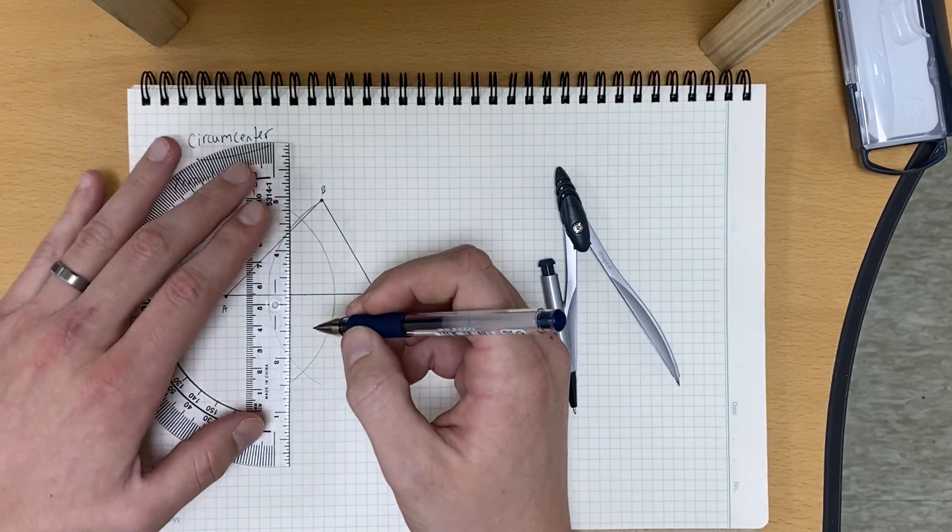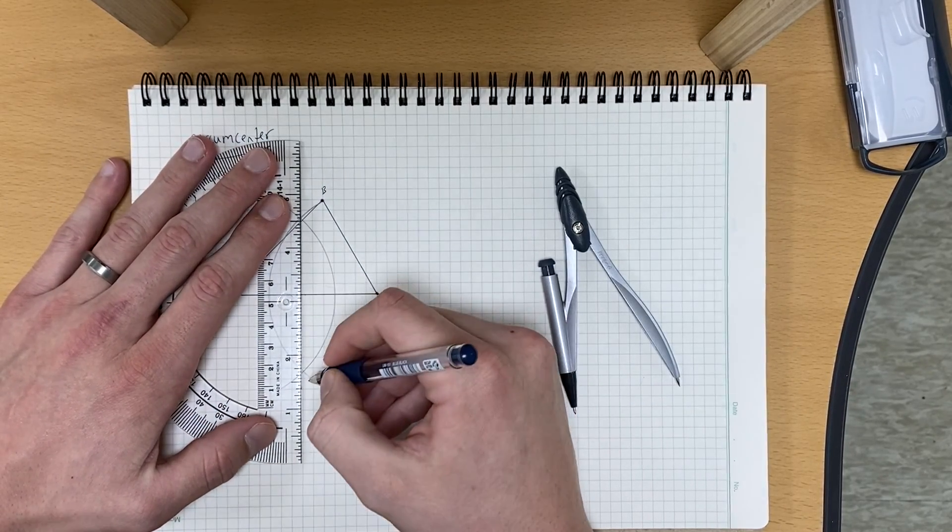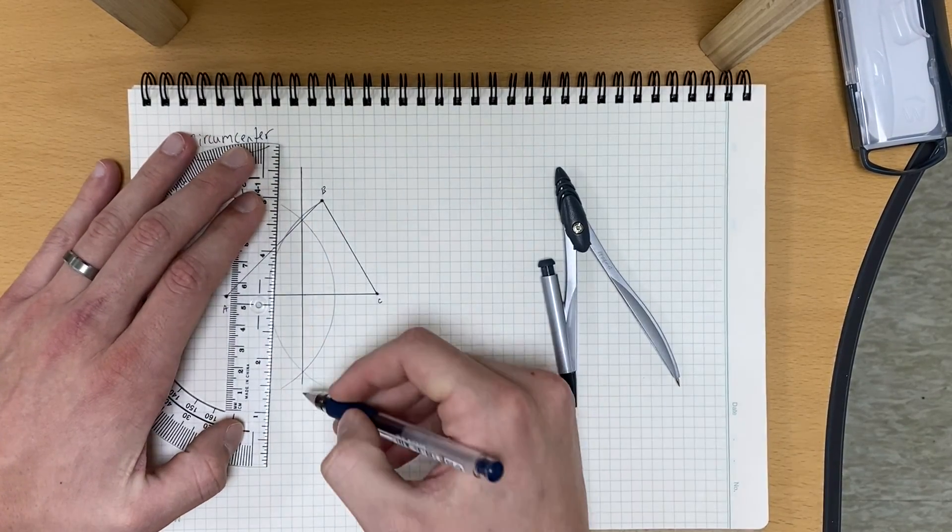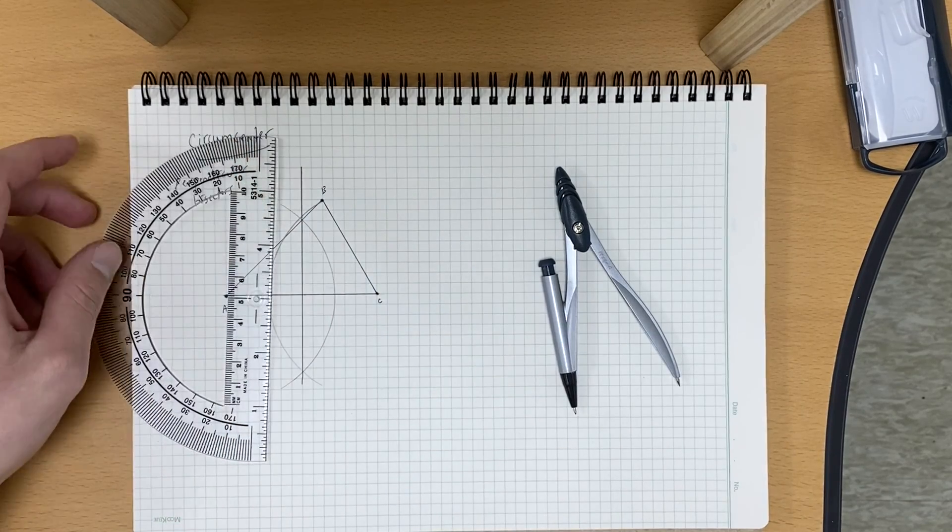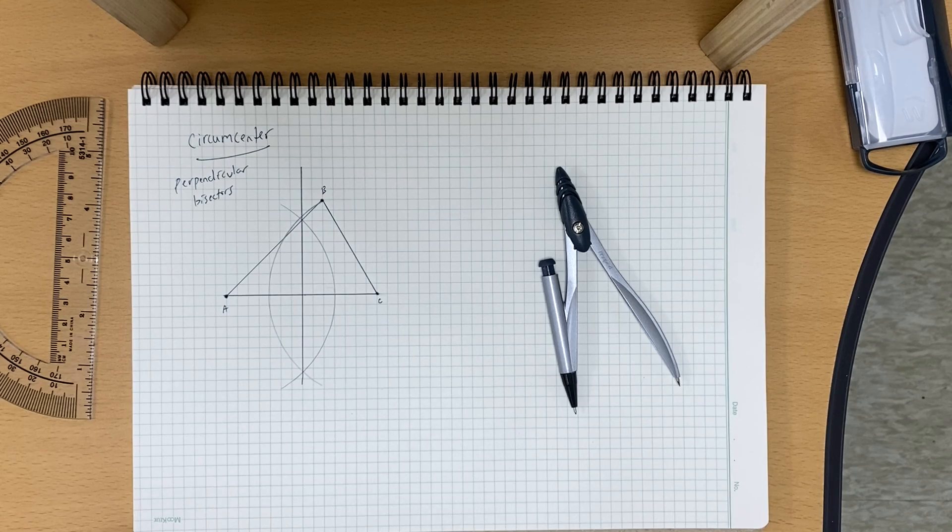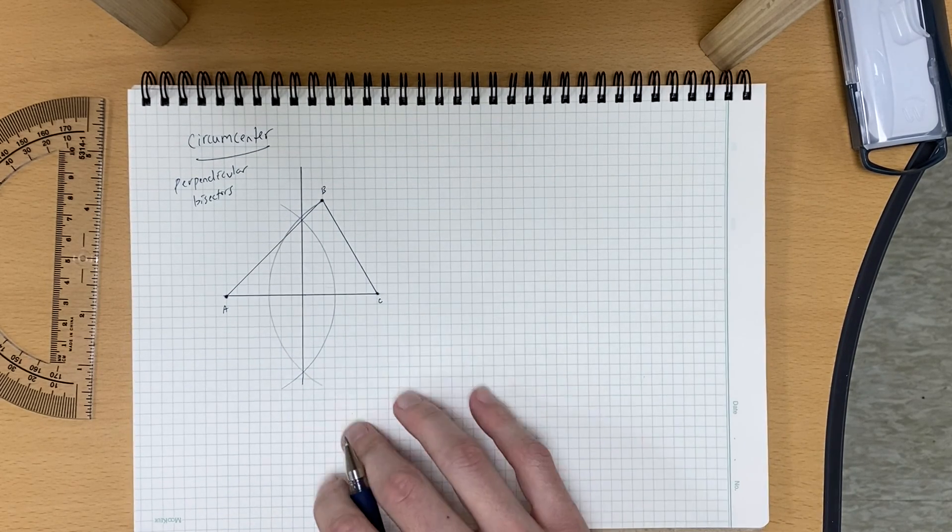Now we take our straight edge, and we're going to draw a line through these points of intersection. And it's always good to draw your line a little bit past each point of intersection, just in case you end up with a circumcenter that's on the outside of your triangle, which will happen if your triangle is obtuse. All right, so that was AC.